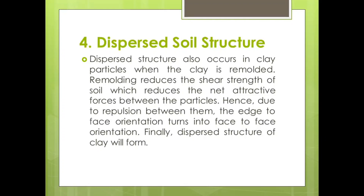The next type of soil structure is dispersed soil structure. Here also it is a loose type of soil. Dispersed soil structure occurs in clay particles where the clay is remolded — meaning if you try to change the shape of the clay particles or clay type of soil structure, then it gives us dispersed soil structure. Remolding will reduce the shear strength of the soil and ultimately reduce the net attractive forces between the particles.